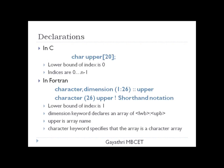Now, declarations of arrays. In C language, the declaration uses the data type of the array, followed by the array name, followed by the upper limit — that is, the maximum bound size of the array. For example, 'upper' is a character array which can store a maximum of 20 elements. The lower bound is not given, which is defaultly taken as 0, so the index ranges from 0 to n minus 1, that is 0 to 19.